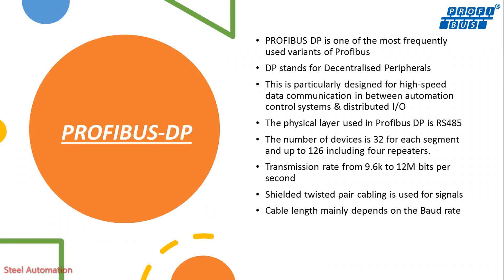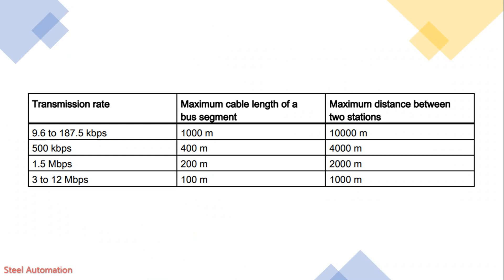Cable length mainly depends on the baud rate. For transmission rates from 9.6 kbps to 187.5 kbps, the maximum cable length of a bus segment is up to 1000 meters, whereas the maximum distance between two stations using an RS-485 repeater is up to 10,000 meters.